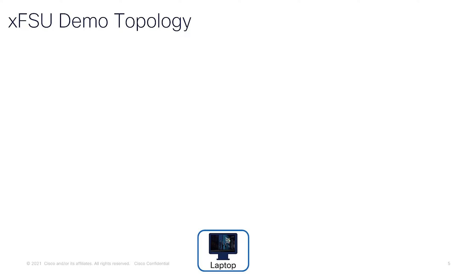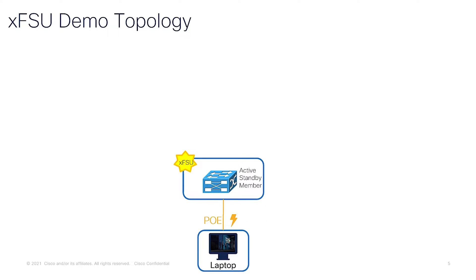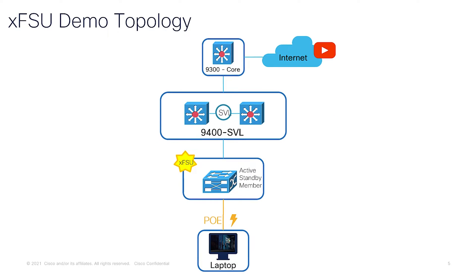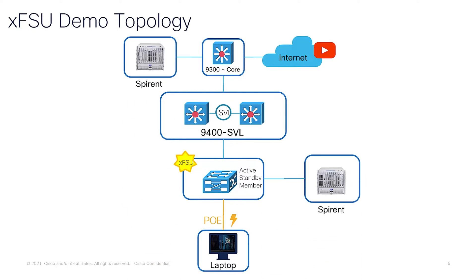Let's walk through our demo topology for our upcoming demo. First, we have our user that is video streaming. This user is connected via PoE Ethernet cable to our stack. The stack is connected to a 9400 SVL pair. This pair is connected to a 9300 core switch that goes out to the internet. And lastly, we have placed spirit generators generating bidirectional traffic.